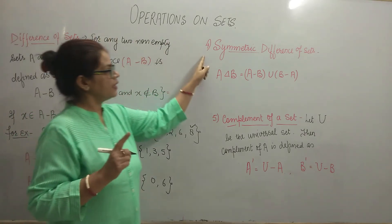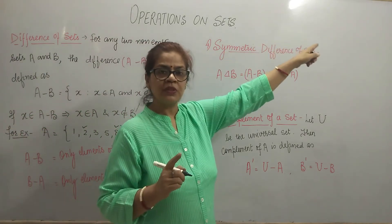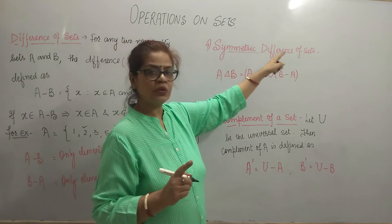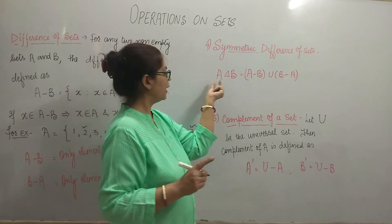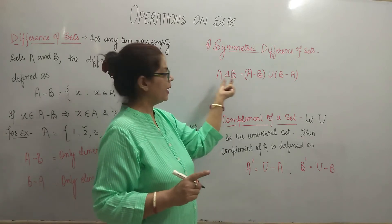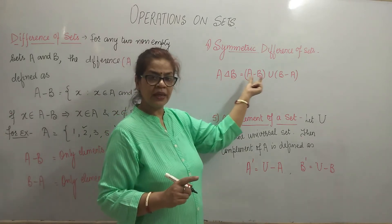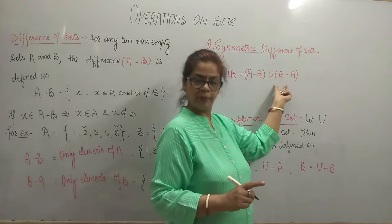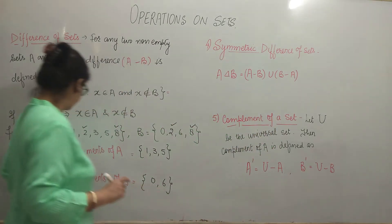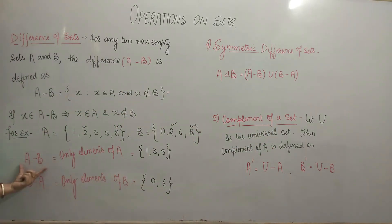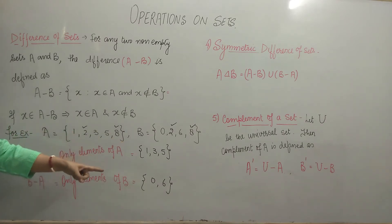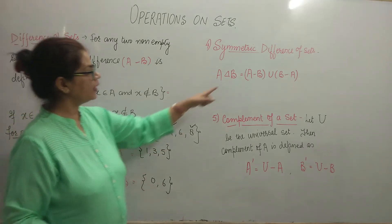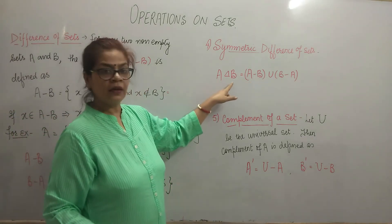Now, the next operation is symmetric difference of two sets. Symmetric difference of two sets is represented by the letter delta — A delta B. A delta B is equal to A minus B union B minus A. Yani aapne A minus B find out kiya, B minus A find out kiya, aur ab in dono ka union kar dete hain, then it will give you A delta B.